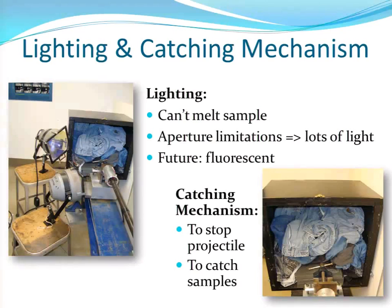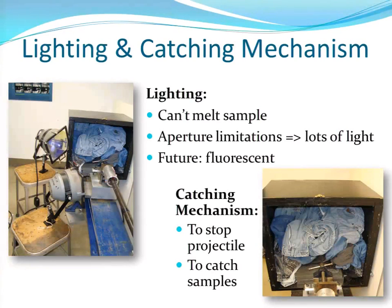Something I thought was interesting: the reason we have this isentropic ramp drive in the Omega experiments is to keep the sample from melting. This was actually an issue we had to deal with in our gas gun experiments because of ballistic gelatin. Because of the aperture of our camera, we had to have lighting so we could see what was going on — but if we kept the lights on too long, our sample would melt. So that was something we had to deal with.